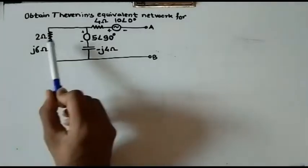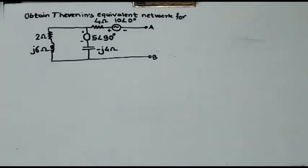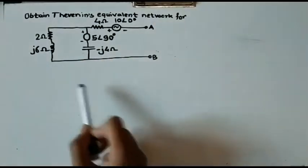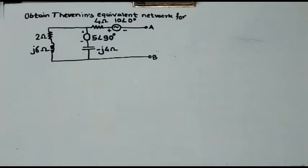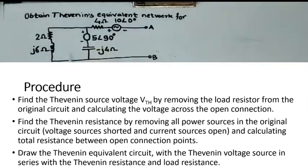This is the example where the circuit consists of inductors, resistors, and capacitors. This is a problem of an AC network. You can see here that there are some reactances and some resistances. We can convert them into impedances or directly solve the problem. Generally, Thevenin's problem can be solved in three steps. The first step is calculation of VTH, the second step is calculation of ZTH, and the last is to draw the Thevenin's equivalent network — in between terminals A and B.